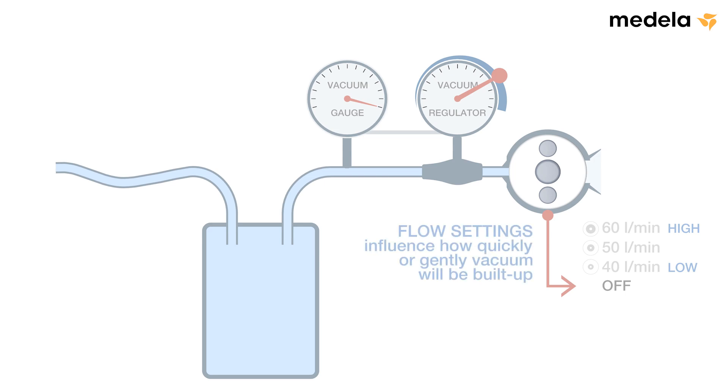Flow settings should only be used to influence how quickly or gently a vacuum will be built up. Once it is set, flow remains constant.